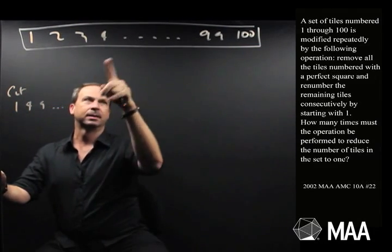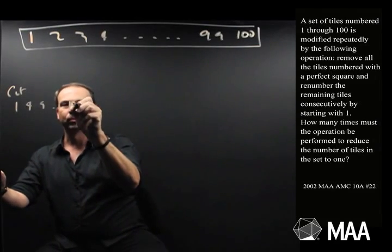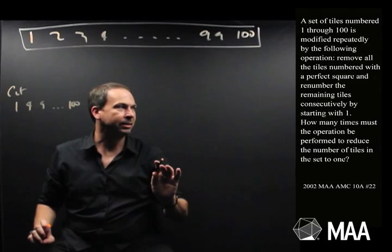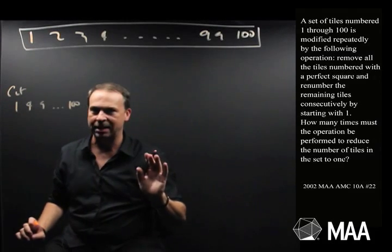1, 4, 9, 16, 25, up to 100. So get rid of all those guys. Cut them out. And then renumber the remaining tiles consecutively starting with 1.